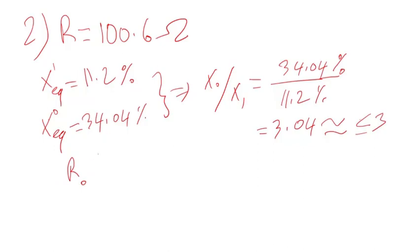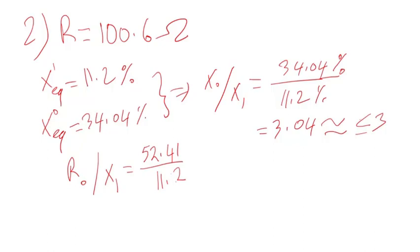Now let's calculate the other ratio: the zero sequence resistance divided by the positive sequence reactance. This is not less than one, so effective grounding is not maintained in this case either.